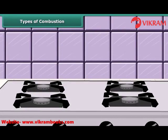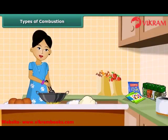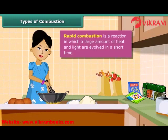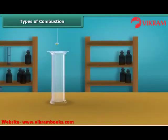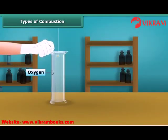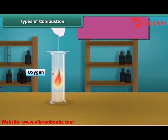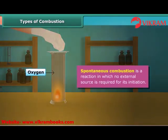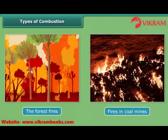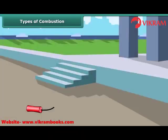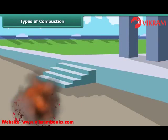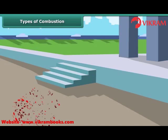Let us now look at types of combustion. A lady igniting LPG in a kitchen to make food — LPG burns quickly producing a lot of heat. This type of combustion is called rapid combustion. When white phosphorus is left in the open for some time, it catches fire. This type of combustion is called spontaneous combustion. Other examples of spontaneous combustion are forest fires and fires in coal mines. The burning of a cracker produces a large amount of heat, light and sound. This type of combustion is called explosion.